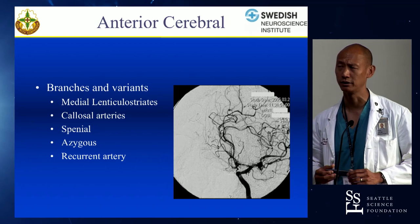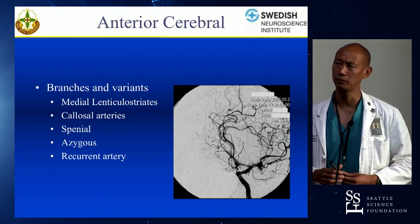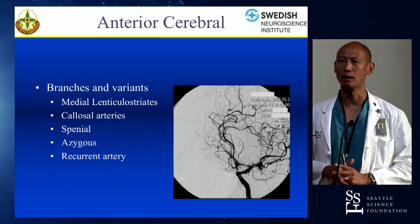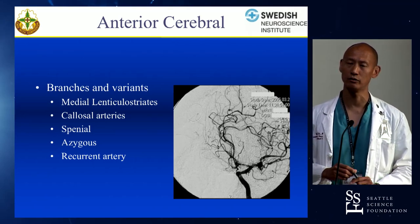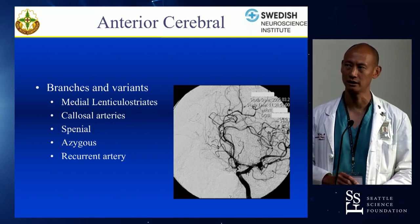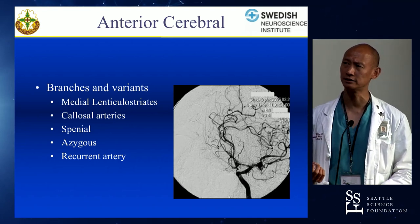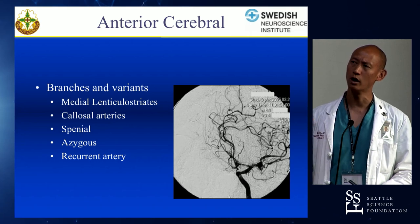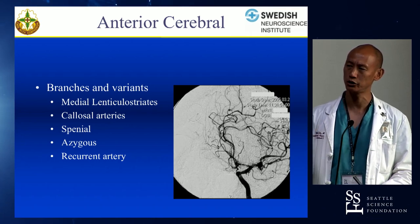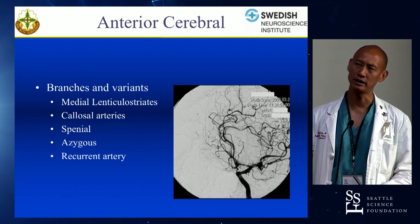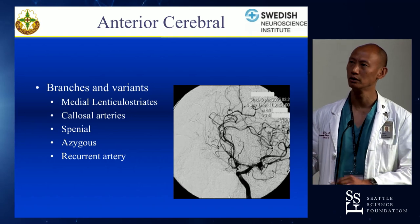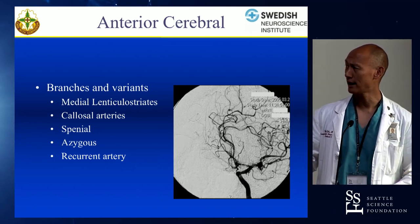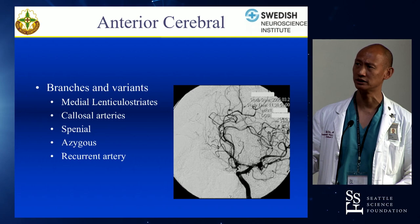An azygous ACA is fairly rare. We'll see a lot of aneurysms arising from a dominant A1 where there's an aplastic A1 on the contralateral side — that still has a very high risk of aneurysm development at the communicating segment. A true azygous ACA is fairly rare: there's an A1 that supplies a single trunk of A2 and A3, which may not actually terminate until it becomes two distal cortical branches of the pericallosal. Azygous ACAs are also very associated with dysplastic and fusiform aneurysms.